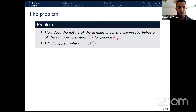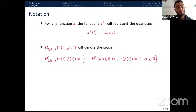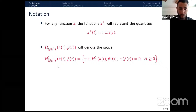The aims of this talk are: first, to understand what happens for general boundary functions α and β and how they affect the behavior of the system; and second, to understand what happens when f depends on time. I introduce notation: for any function z, z⁺ denotes t + z(t) and z⁻ denotes t − z(t). I also define H¹_β(α(t), β(t)) as the space of H¹ functions vanishing at the endpoint β(t).